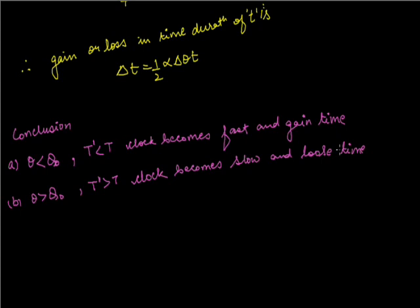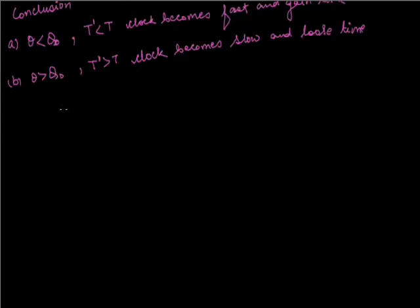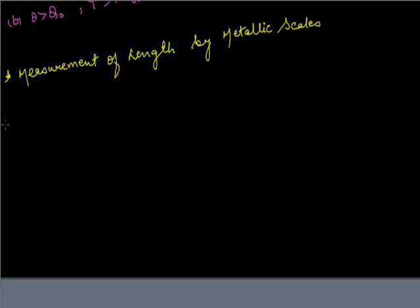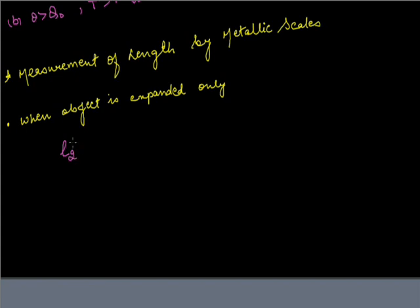Now let us see measurement of length by metallic scales. Case one: when only the object is expanded. Then the equation is L2 equals L1 times bracket 1 plus alpha naught times (theta 2 minus theta 1).